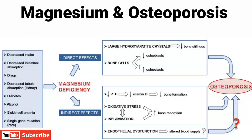Magnesium is very important for preventing osteoporosis. Magnesium deficiency is caused by decreased intake, decreased intestinal absorption, diabetes, and alcohol. Magnesium deficiency causes large hydroxyapatite crystals, which decrease bone stiffness. It decreases osteoblast formation and increases osteoclast formation. Severe magnesium deficiency decreases serum parathyroid hormone, decreases vitamin D production, and decreases bone formation. It also causes oxidative stress, inflammation, increased osteoclastic activity, endothelial dysfunction, and altered blood supply.